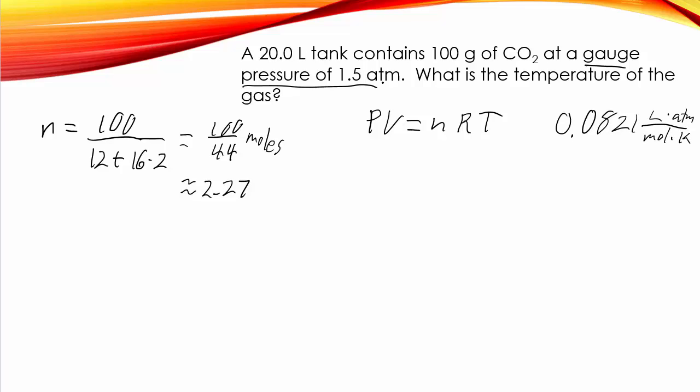One of the values for R is 0.0821 liter atmospheres per mole kelvin. We're in liters, we're going to be in atmospheres, but we've got to fix that to absolute pressure, and we've got moles. So we don't have to do any unit conversions as long as we use this value for R. Plugging into this equation, I've got 2.5 because I have to add 1 to make it absolute pressure from gauge pressure. The volume is 20 liters. N is my moles, which is 100 over 44. I'm going to plug in 0.0821 for R.